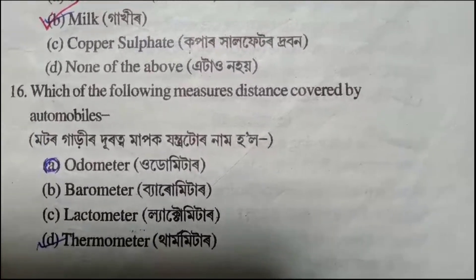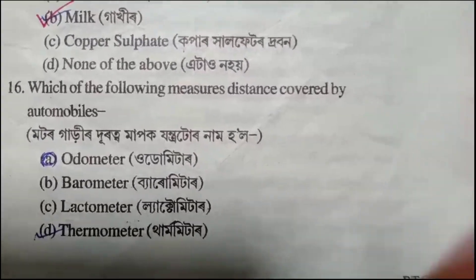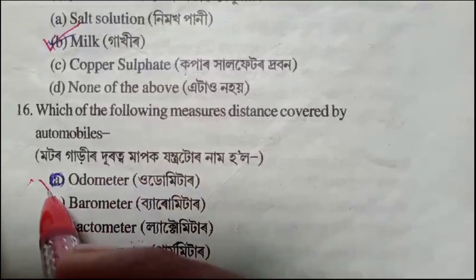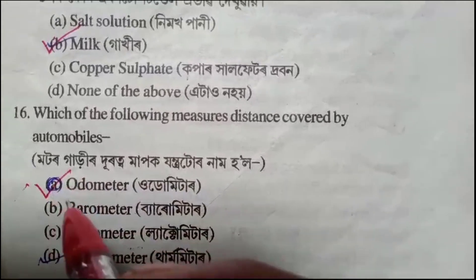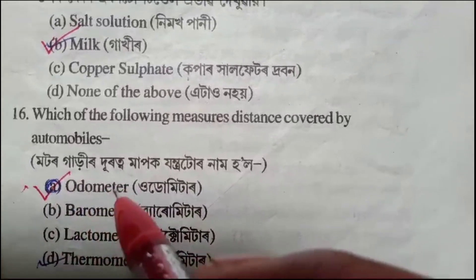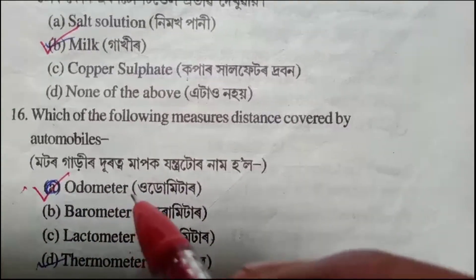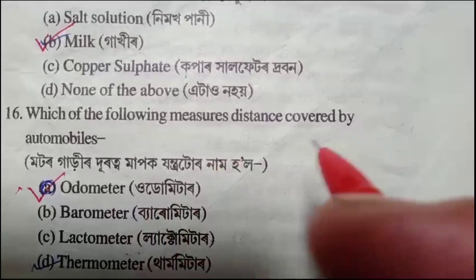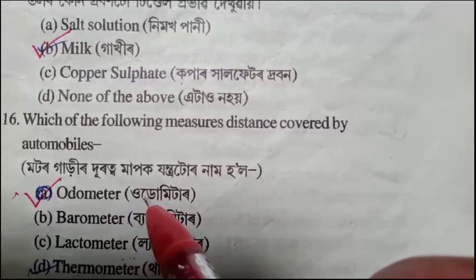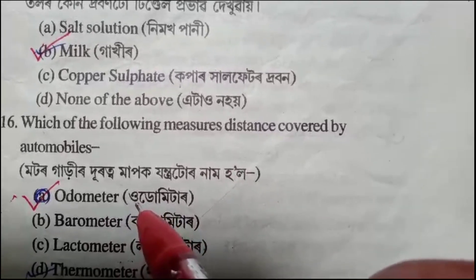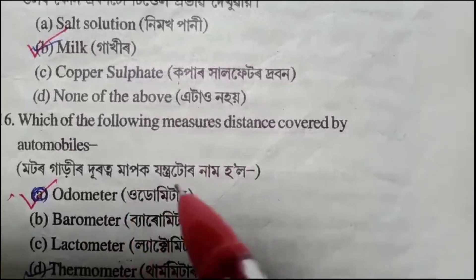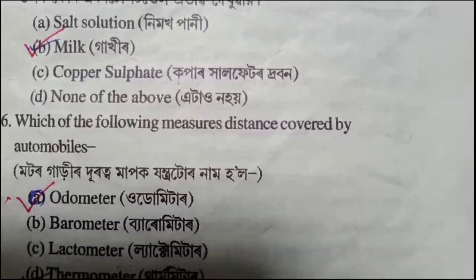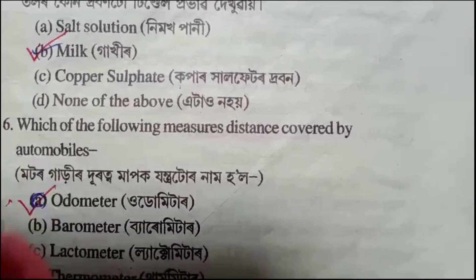Question number 16: Which instrument measures the distance traveled by a motor car? The options are barometer, lactometer, thermometer, and odometer. The answer is odometer, because it measures distance in kilometers traveled by a car.